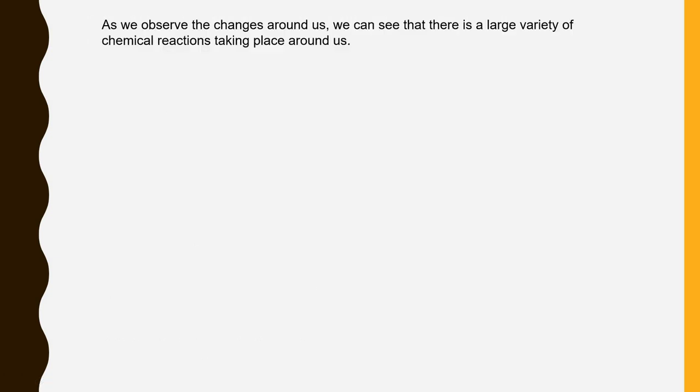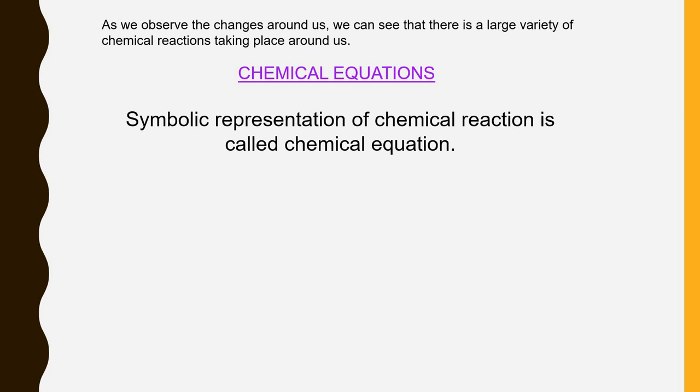As we observe the changes around us we can say that there is a large variety of chemical reaction taking place around us. Now these chemical reactions are usually represented in a symbolic form. And when we represent it in a symbolic form we call it as chemical equations. So definition of chemical equation is symbolic representation of chemical reaction which we call as a chemical equation.